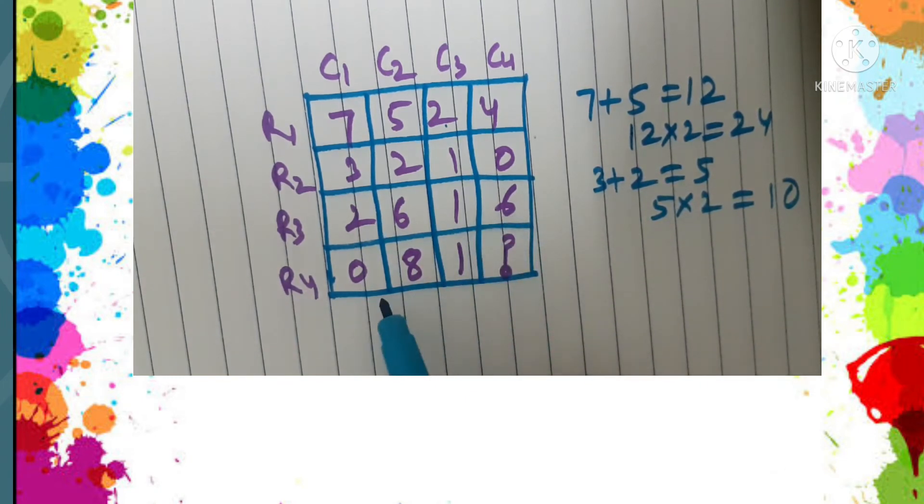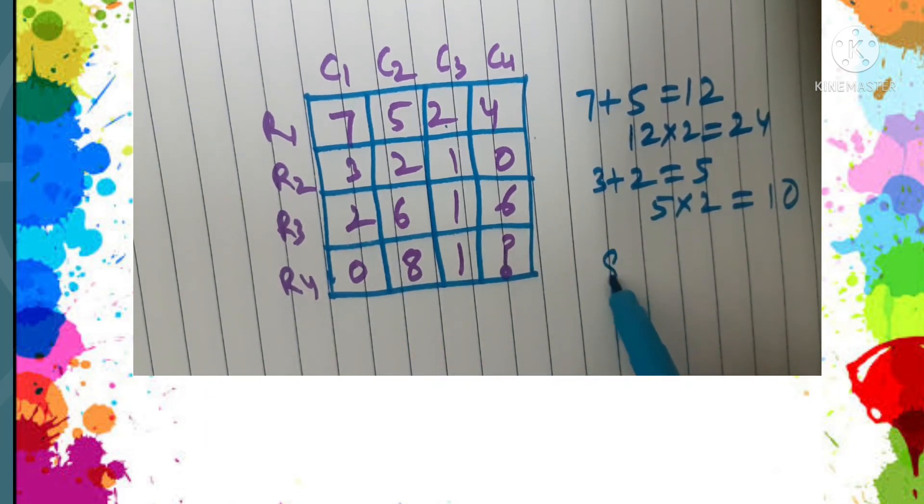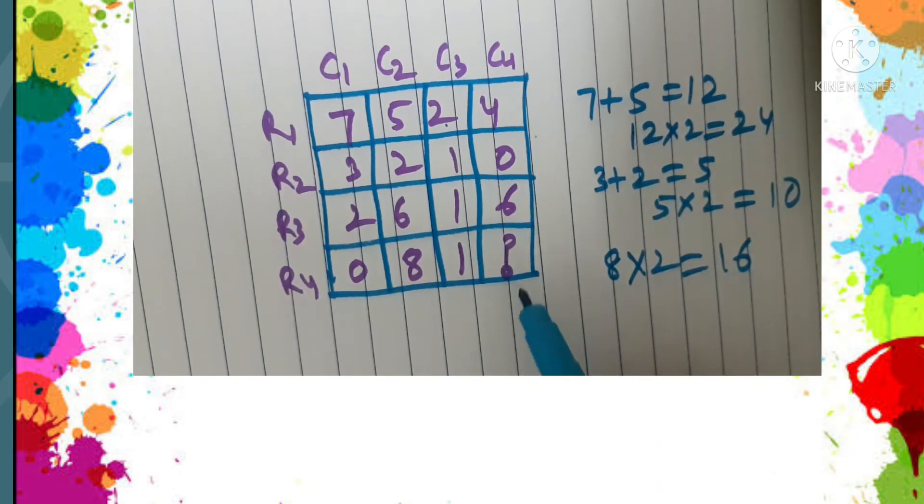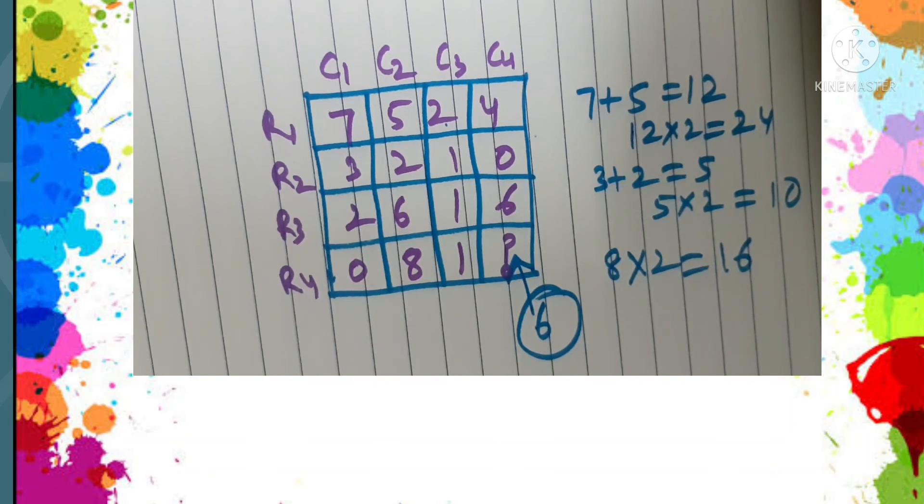Now the last one: zero plus eight, that is eight, and eight into two is sixteen. So which number will come over here? It is sixteen. Isn't it interesting?